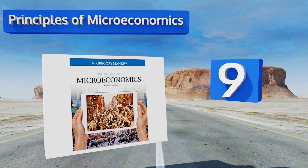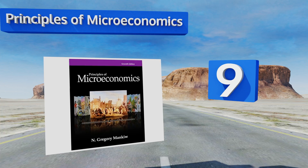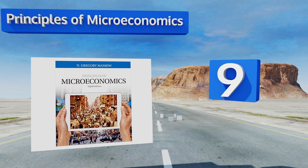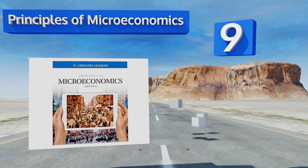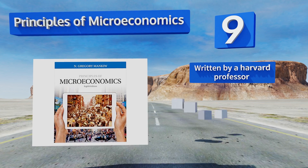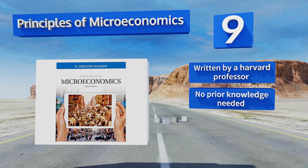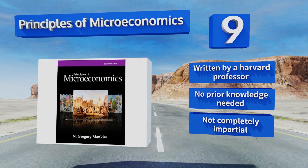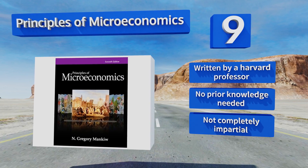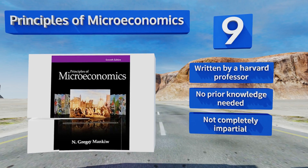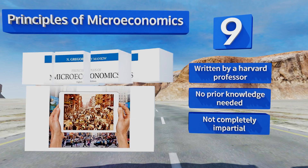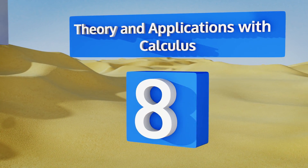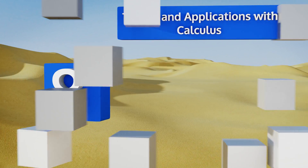At number nine, N. Gregory Mankiw's best-selling Principles of Microeconomics uses brief and concise writing to convey the fundamentals as quickly as possible without getting mired in unnecessary technical terms or tangents. It also features contributions from award-winning economists. It's written by a Harvard professor and no prior knowledge is needed, but it's not completely impartial.